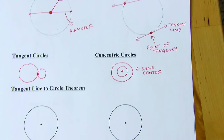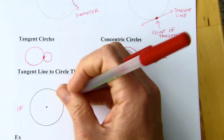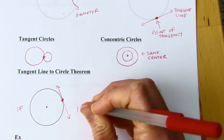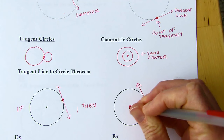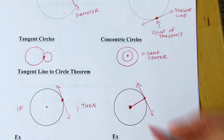Now we've got our first theorem — the tangent line to circle theorem. So we're going to have a tangent line: a line that intersects the circle once. If you connect the point of tangency and the center of the circle, that's a radius. And anytime you draw a line segment from a point of tangency to the center, it's going to be perpendicular to the tangent line. That radius and that tangent line are perpendicular every single time — that's the tangent line to circle theorem.